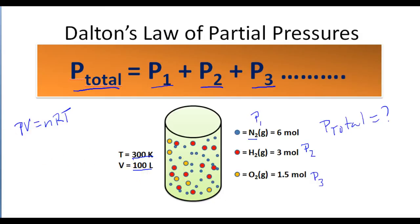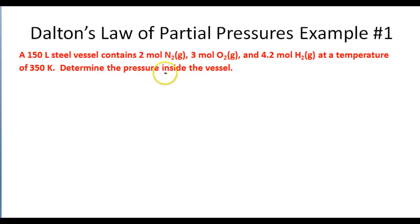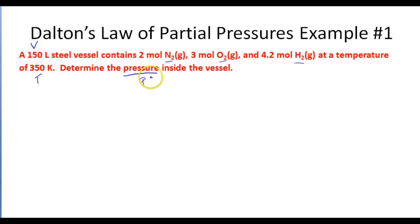Let's take a look at a couple of examples using Dalton's law of partial pressures. A 150-liter steel vessel contains two moles of nitrogen gas, three moles of oxygen gas, and 4.2 moles of hydrogen gas at a temperature of 350 K. We want to determine the total pressure inside this vessel.